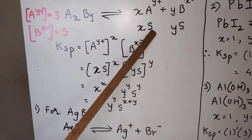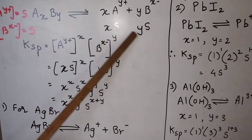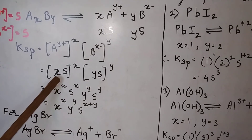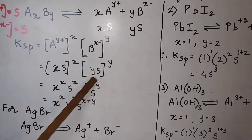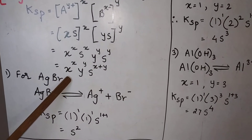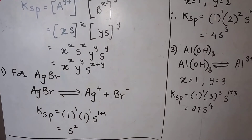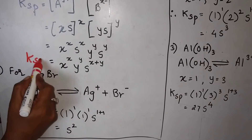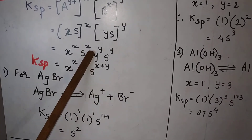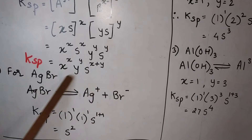A(Y+) is XS, so you get (XS) raised to X multiplied by (YS) raised to Y. Opening the brackets: X raised to X times S raised to X, multiplied by Y raised to Y times S raised to Y. The final equation becomes KSP = X^X · Y^Y · S^(X+Y), since when the bases are the same you add the powers: S raised to X plus Y. This is the formula to find KSP values.